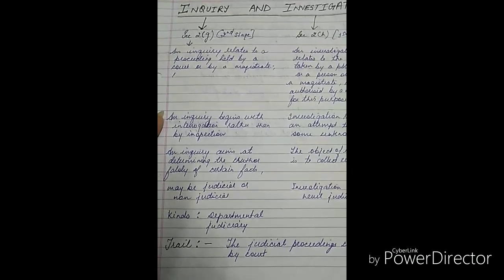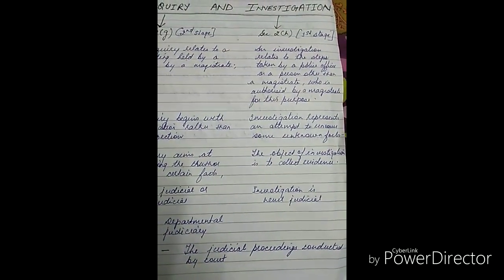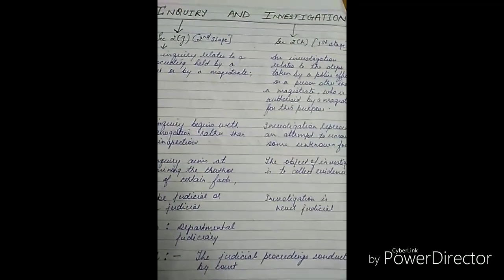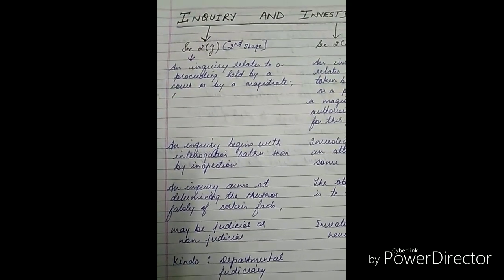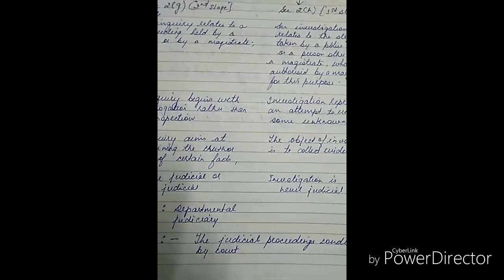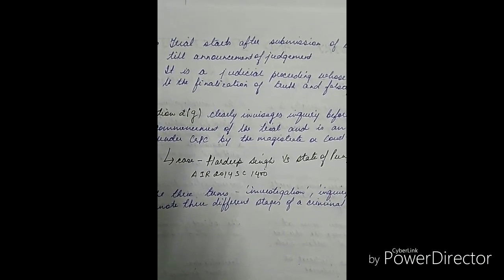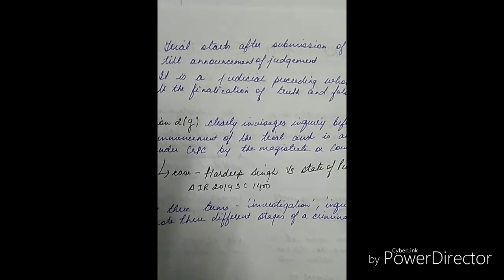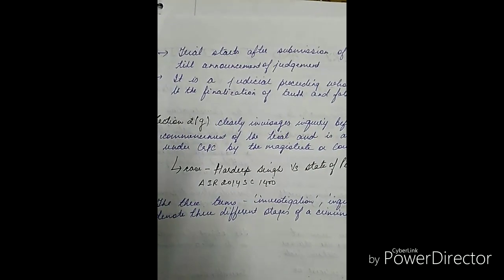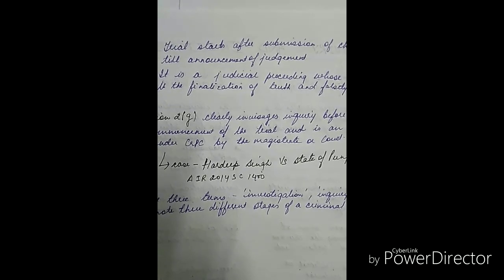Now we talk about trial. Trial refers to judicial proceedings conducted by a court. Trial starts after the submission of the charge sheet until the announcement of judgment. It is a judicial proceeding whose purpose is the finalization of truth and falsity in a case.